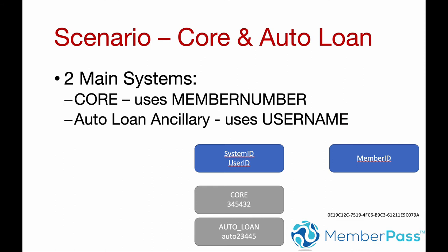Here's just a quick example. If you look on the right-hand side, I've got a Member ID — it's just a GUID, randomly created. And on the left-hand side, I've got two different systems. On the core side, we have a member number of 345-432, and there's an auto-loan ancillary system where the user ID is something like auto23445. We would correlate those both to this GUID, to this UUID value.